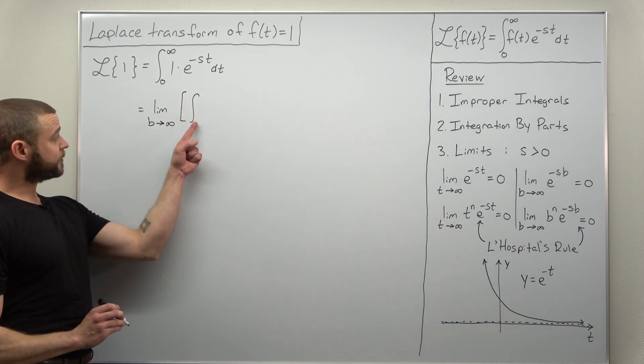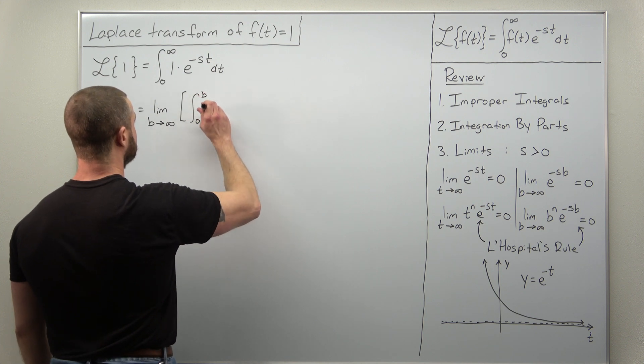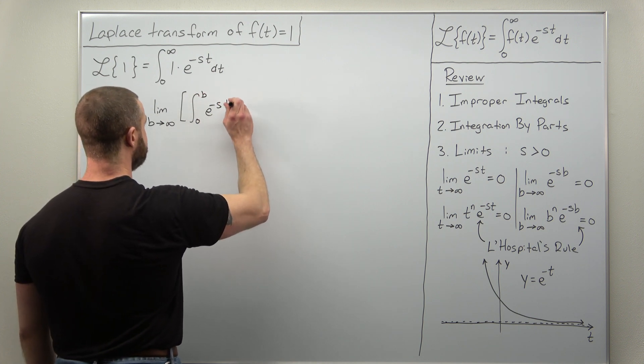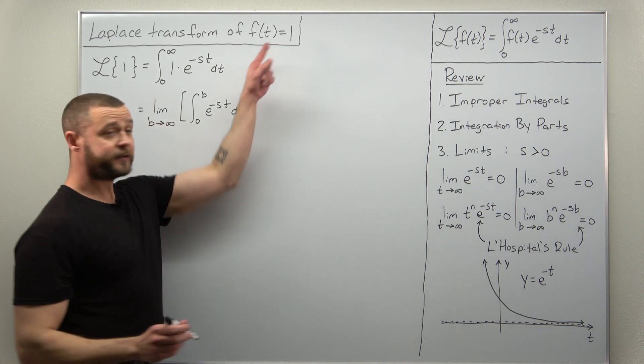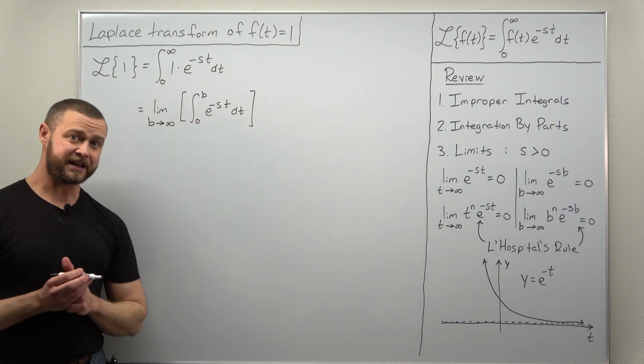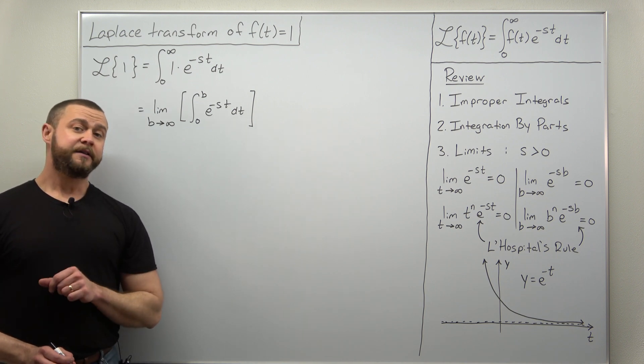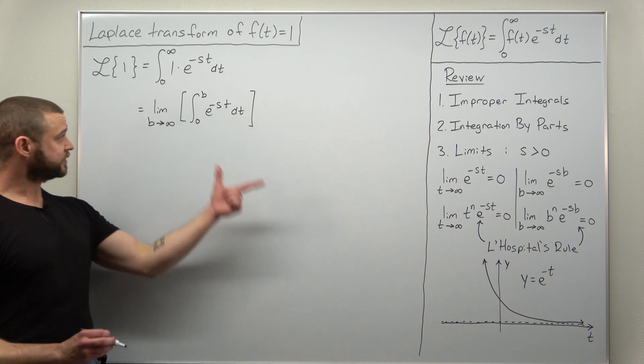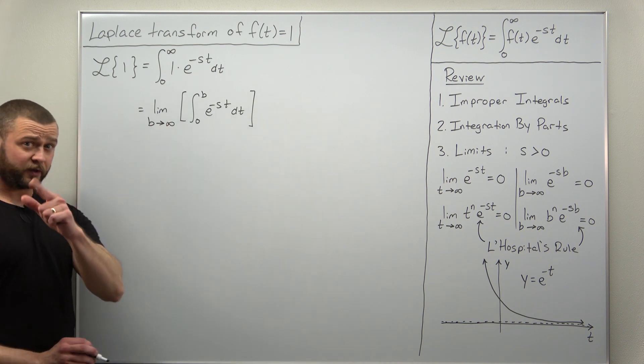So we now have our integral going from zero to b, and the function stays the same. Since our function f of t was one, we're just integrating e to the negative st, and again thinking back to improper integrals from your calc 2 course, first we're going to evaluate the integral and then we'll evaluate the limit.